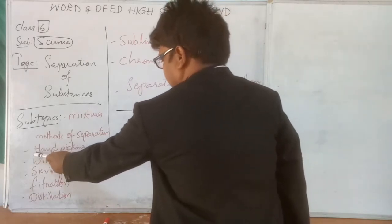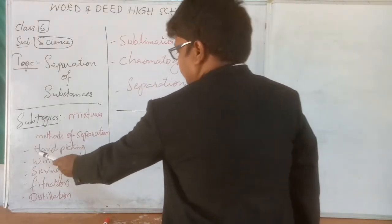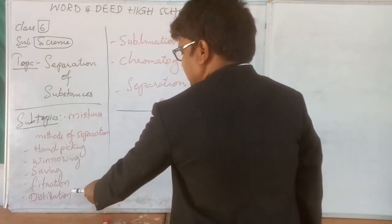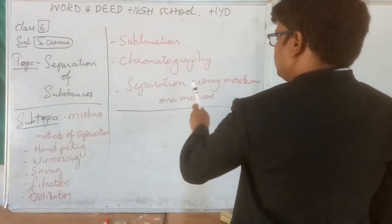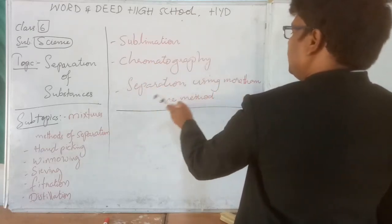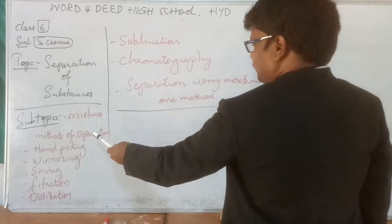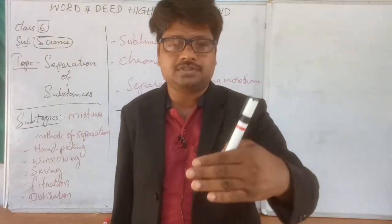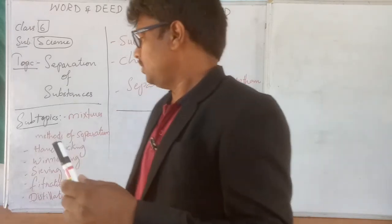Here is the list of methods of separation: hand picking, winnowing, sieving, filtration, distillation, sublimation, chromatography, and separation using more than one method. These are the different methods we follow to separate substances from a mixture — where two or more substances are present together.